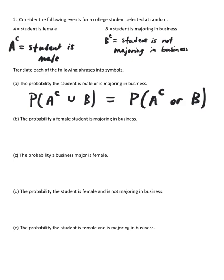Part B, the probability a female student is majoring in business. Okay, this one, we want to know the probability that we have a female student who is majoring in business. This is the same as the probability of a student majoring in business given the fact that they are female.